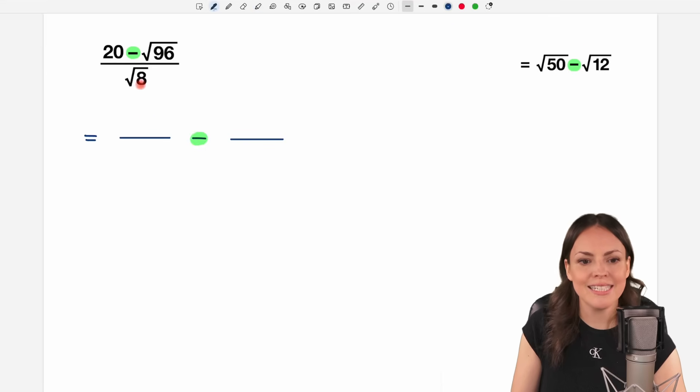Okay, how do we do this? Well, the denominator stays the same, so we have the square root of 8 here, and the square root of 8 here as well, and in the numerator in our first, we take the first part of this difference,